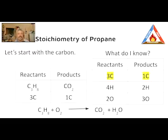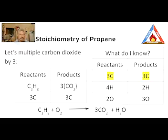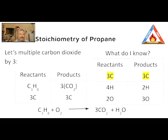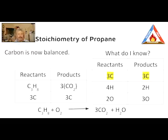So let's start with carbon. Carbon is found in propane and there are three on the reactant side, but only one in the carbon dioxide. Carbon is not balanced — but what can I do? If I multiply the carbon dioxide by three, three times one is three. Now my carbon is balanced. Let's move on to hydrogen.